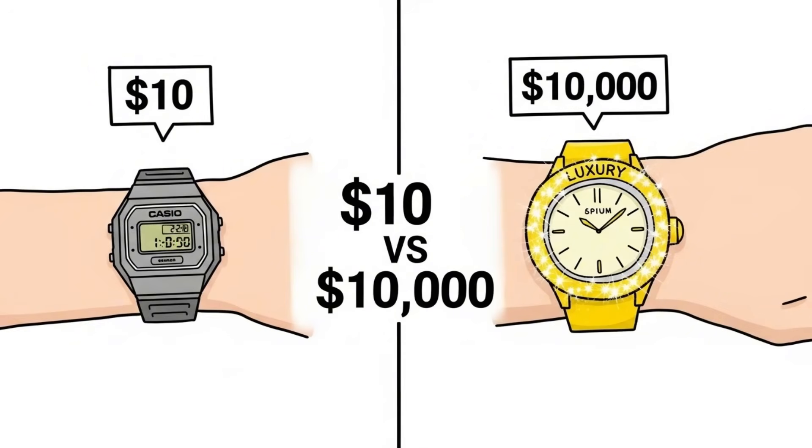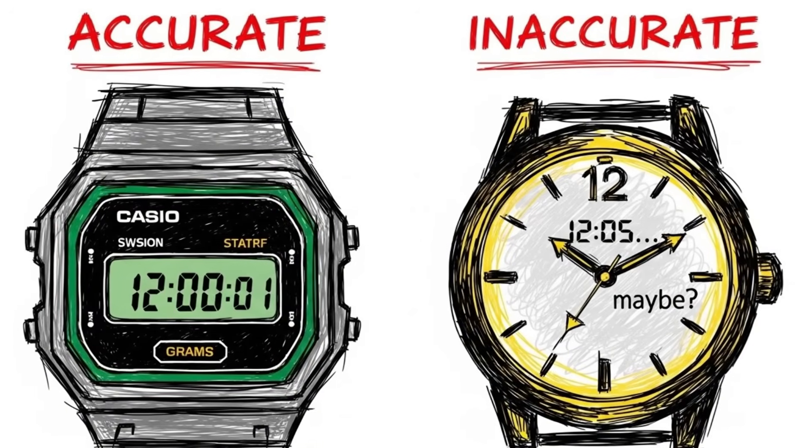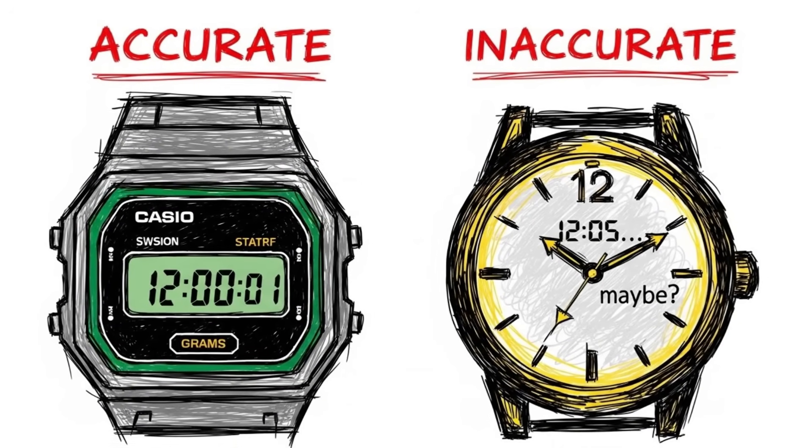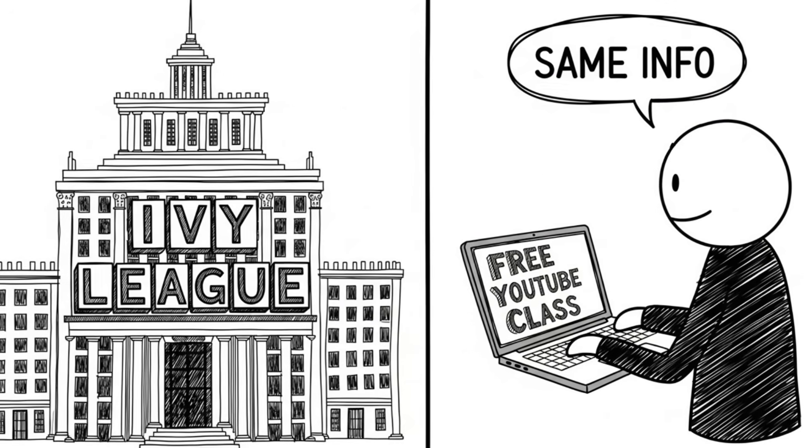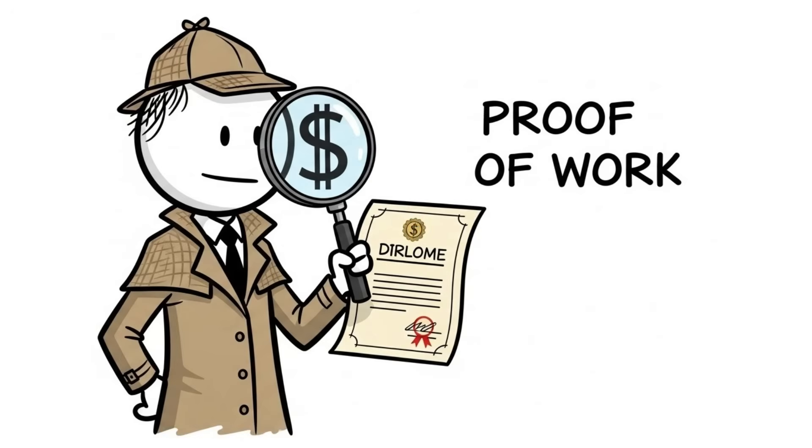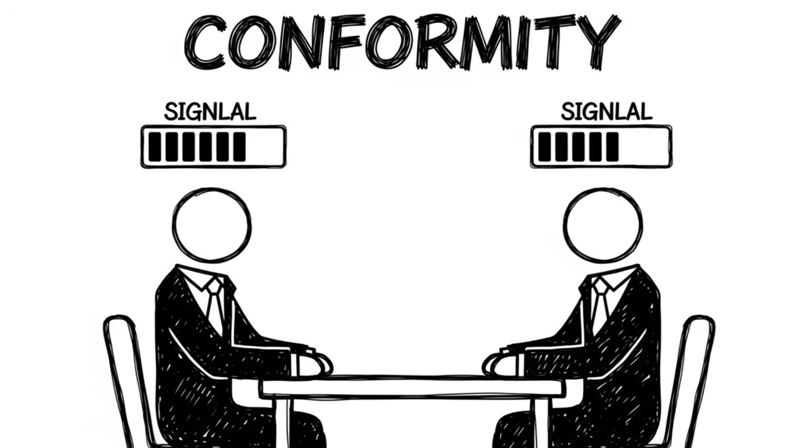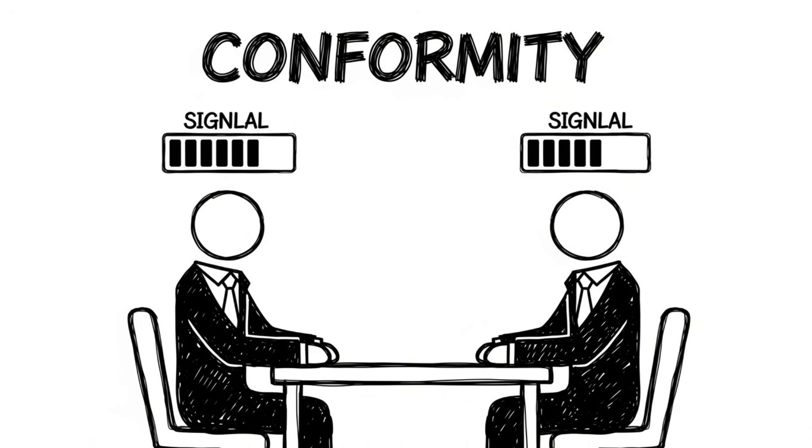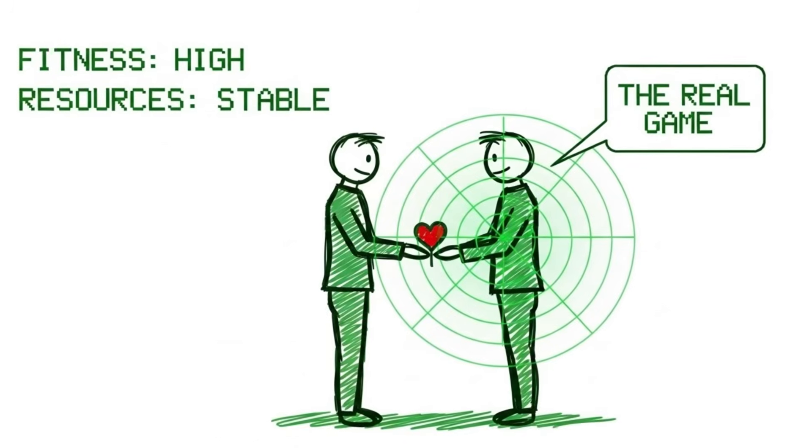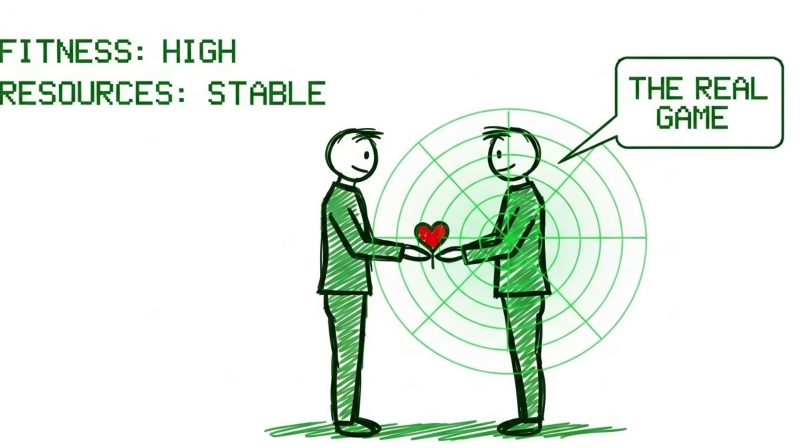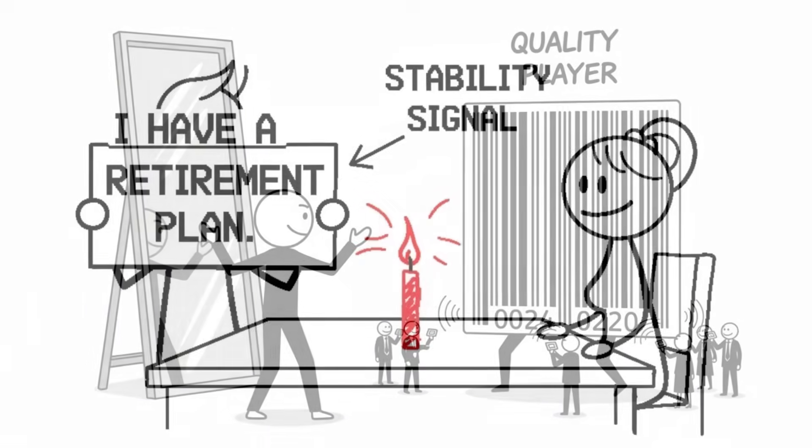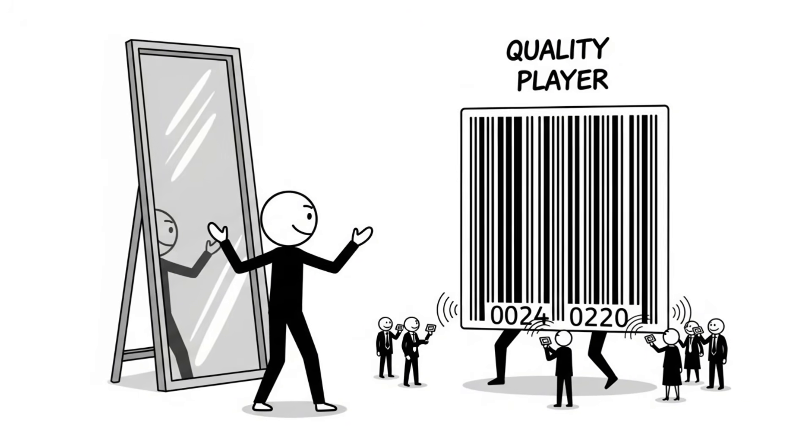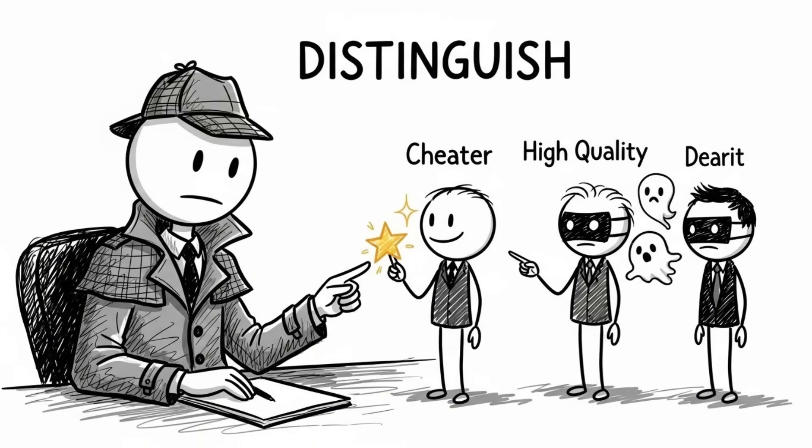You do this too. Why do people buy luxury watches that tell time worse than a $10 Casio? Why do people go to expensive universities when all the information is available online for free? You are engaging in signaling. You aren't buying a product. You are buying a proof of work. You are proving you have resources to burn. This is the hidden game of social interaction. We are constantly broadcasting signals to distinguish ourselves from cheaters or low-quality players. The job interview isn't about your skills. It's a game of signaling conformity and competence. The first date isn't about dinner. It's a game of signaling stability and genetic fitness. Once you see the signals, you stop looking at the surface actions and start seeing the mathematical calculations underneath.